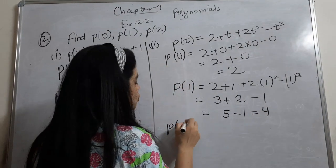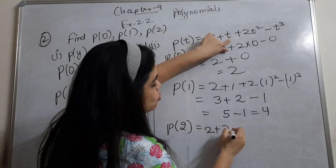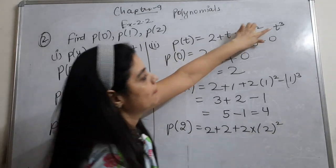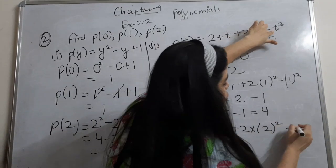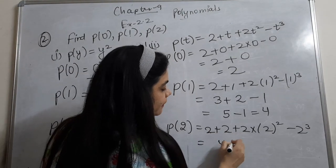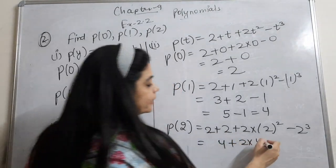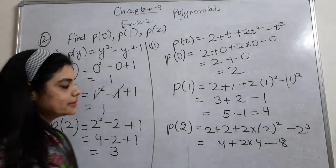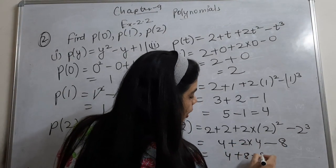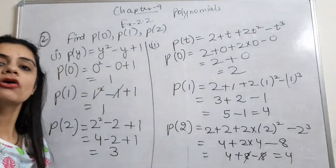Now p(2): put t = 2. So 2 plus 2 is 4, plus 2 into 2 is 4, minus 2³ which is 8. So 4 plus 4 minus 8, the 8s cancel out, giving 4. So these were my first two parts.